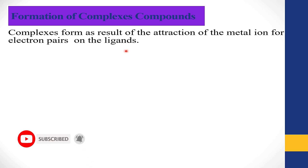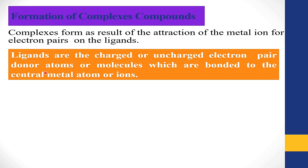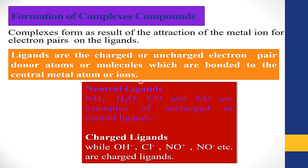Ligands are charged or uncharged electron pair donor atoms. They may be anionic, cationic, or neutral species — atoms and molecules which are bonded to the central metal atom or ion — and they have the ability to donate an electron pair. Examples of neutral ligands include ammonia, water, carbonyl, and nitrosyl.